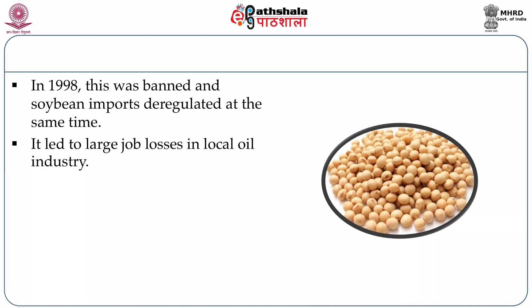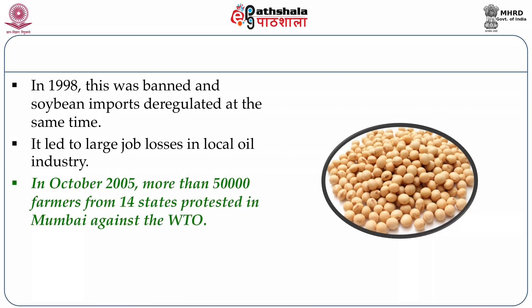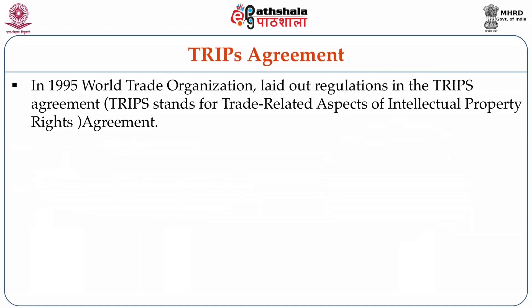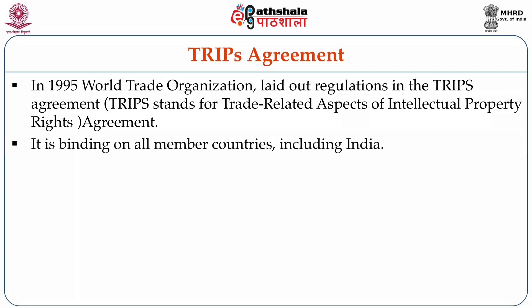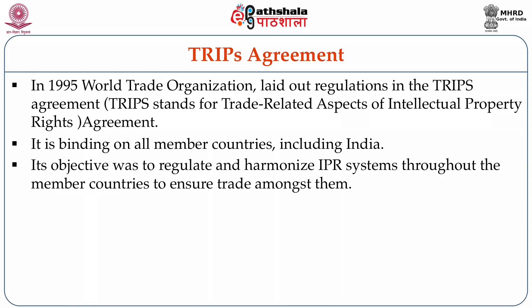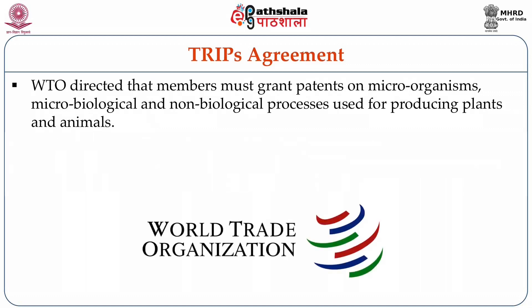This and many other regulations by the WTO led to large-scale protests by people all across India. In 1995, the same World Trade Organization laid out the TRIPS Agreement — Trade Related Aspects of Intellectual Property Rights Agreement — which is binding on all member countries including India. WTO directed its members to grant patents on microorganisms, microbiological and non-biological processes, which were all used for making new plants and new animal varieties.